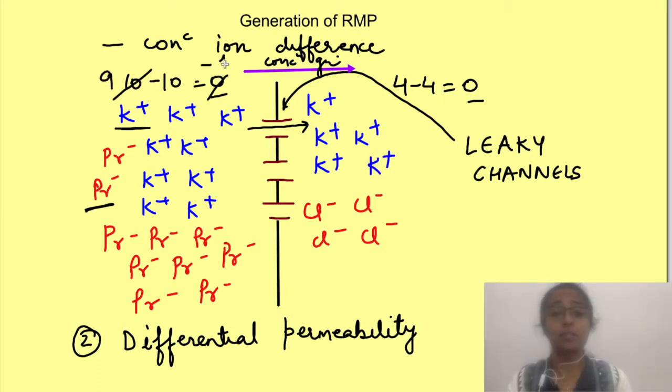Now this movement causes an imbalance of positive and negative ions inside and outside. Now their numbers are not equal inside and outside. So this will create a negativity inside and positivity outside. So what happens, despite the concentration gradient being there from inside to outside, this side starts repelling the ions because of the developing positivity.